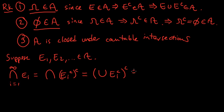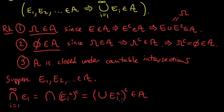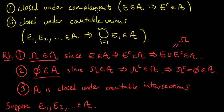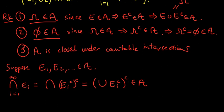And this is in A because each of these is in A, so their complements are in A. The union is in A by condition two. And the complement of that is in A by condition one. And therefore, this whole thing is in A. So that proves that A is closed under countable intersections.